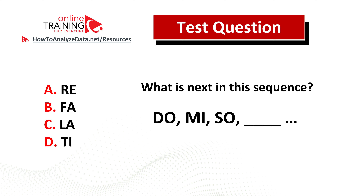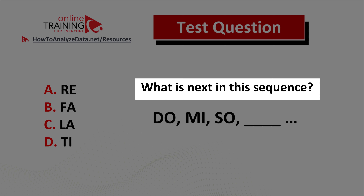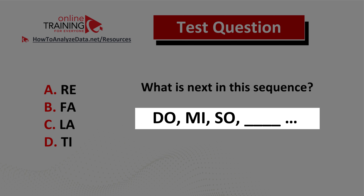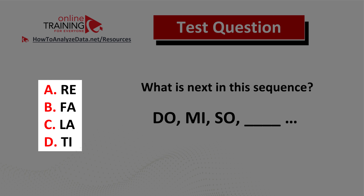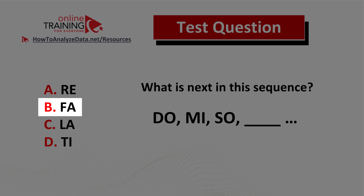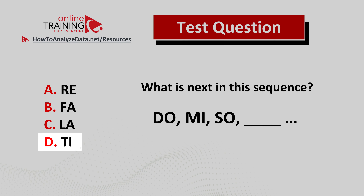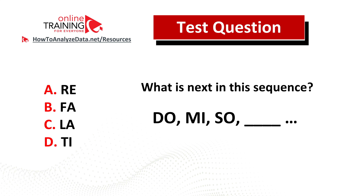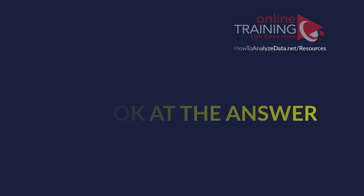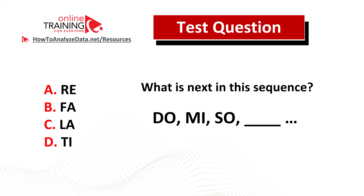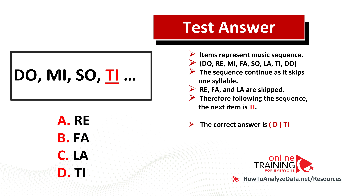Here is a tricky question from the real test. What comes next in this sequence? You have a sequence of items — do, mi, so — and then the missing item. You have four choices: choice A, re; choice B, fa; choice C, la; and choice D, ti. Now might be a good time to pause this video to see if you can come up with the answer on your own.